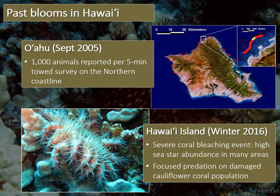In 2005, researchers documented another Crown of Thorns Seastar bloom along the northern coast of Oahu. Surveys indicated a density of approximately 1,000 animals per 5-minute survey tow. Similar to the Molokai bloom, predation focused on rice and cauliflower corals. More recently, increasing numbers of Crown of Thorns Seastars were observed on Hawaii Island following a severe coral bleaching event in 2015. Numerous reports were received by the Eyes of the Reef Network documenting relatively high numbers of sea stars at certain coral-rich embayments in West Hawaii, with predation often focused on the remaining population of small branching corals.